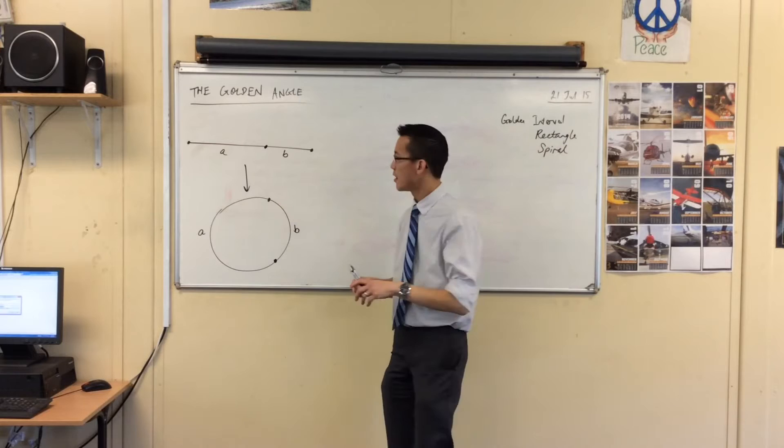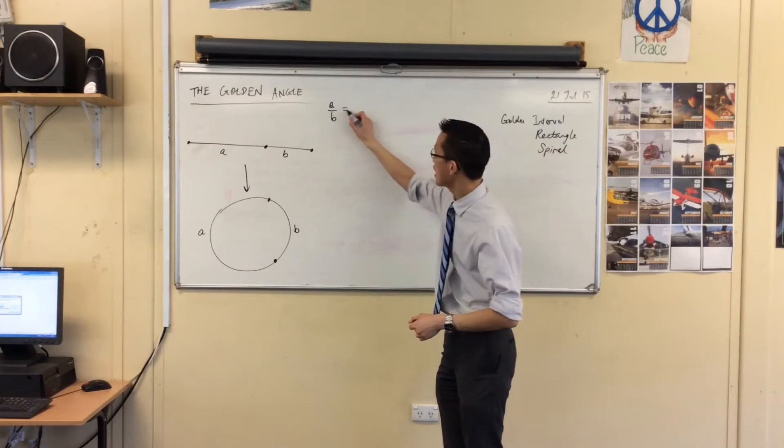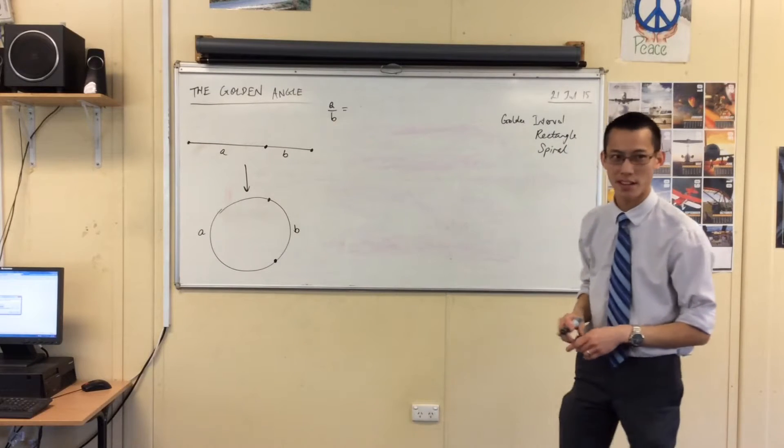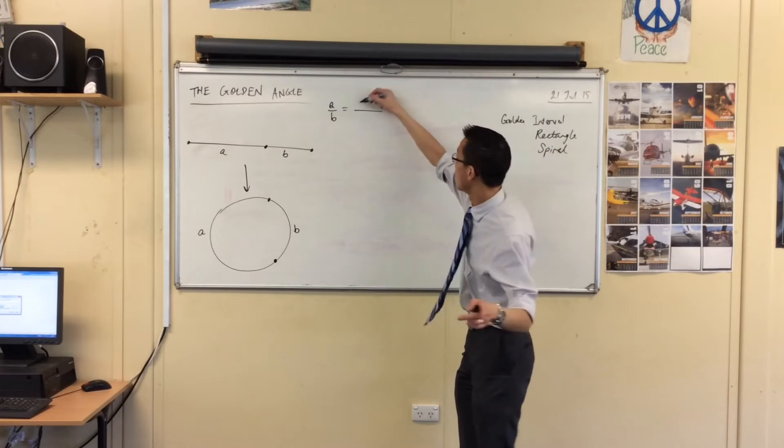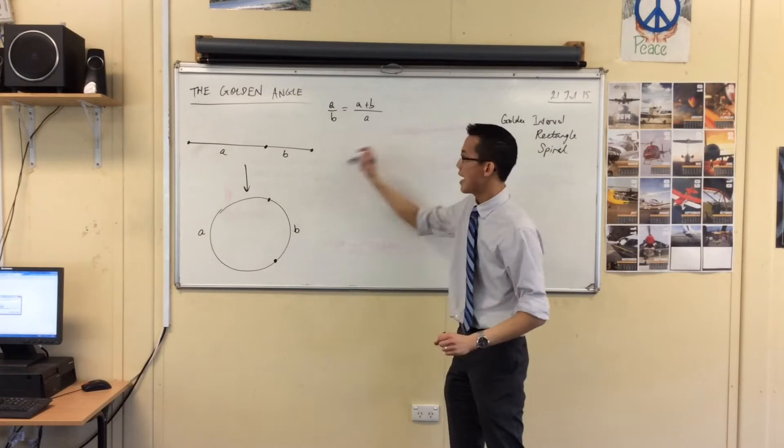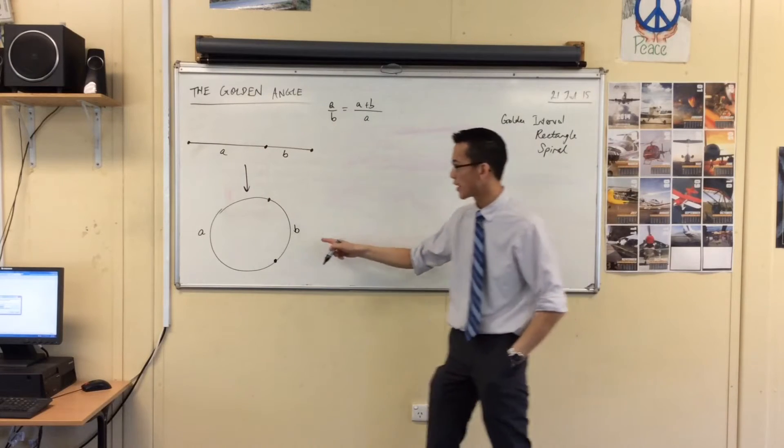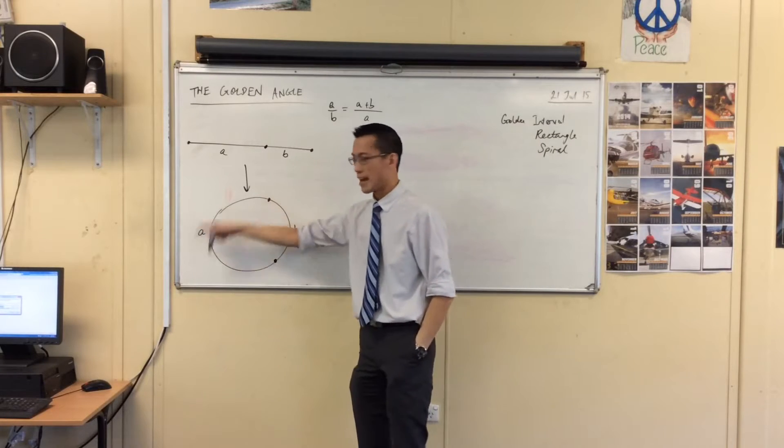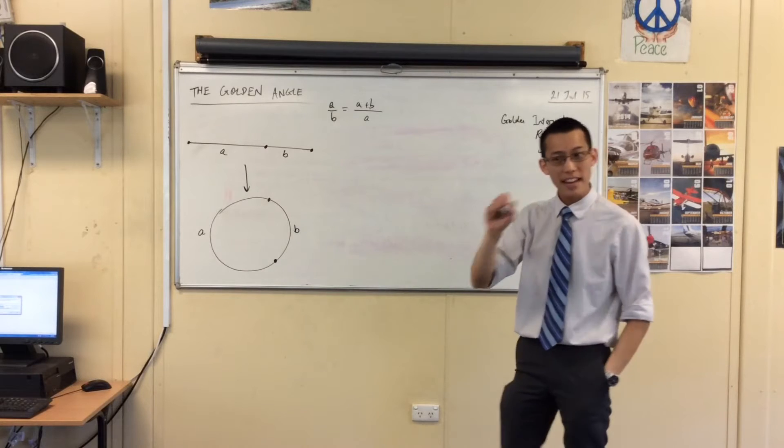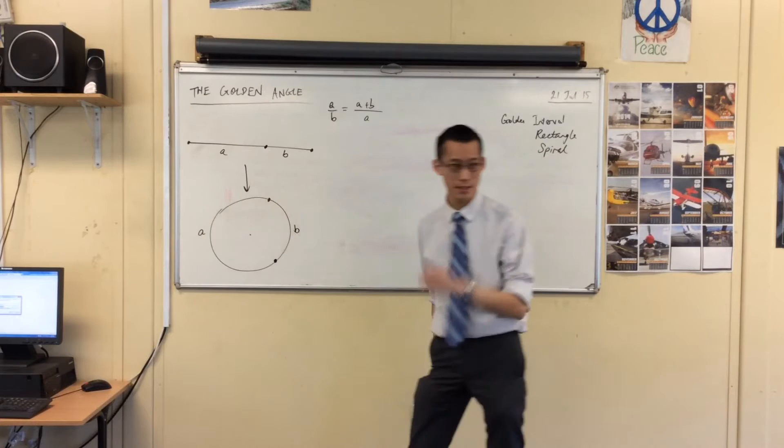This idea here that A over B, what's it equal to? What ratio is it equal to to make it the golden ratio? Who remembers? It's another fraction. A plus B. Very good. A plus B, the whole thing, right, over A, the longer small section. So in here, what have I got? I have B around here. A so far, so good, but now I want to make an angle out of it. So put a point at the center of this circle we've just made. Put a point right there at the center.